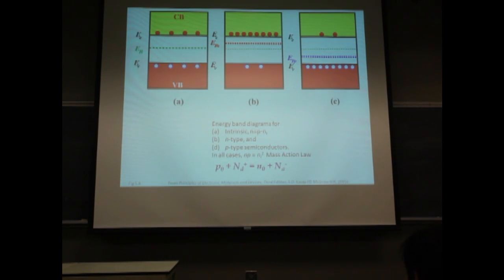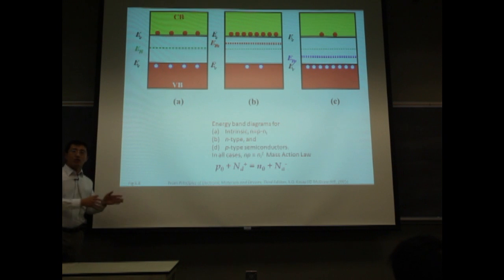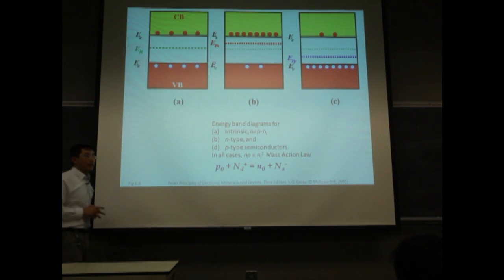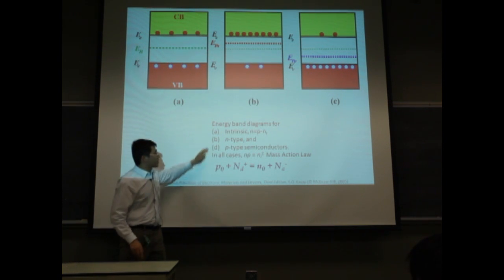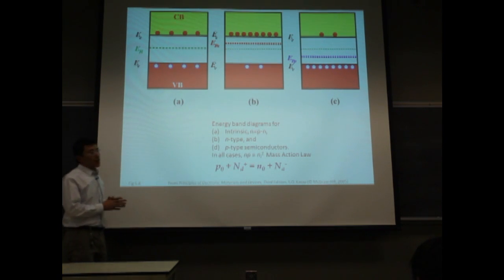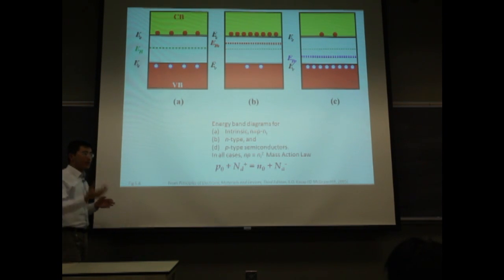What is an intrinsic or extrinsic semiconductor? Intrinsic semiconductors share the same number of n and p — electron and hole numbers are equal to the intrinsic carrier concentration, given by n_i. The n-type semiconductor has many more electrons as free carriers, while the p-type semiconductor has more holes.